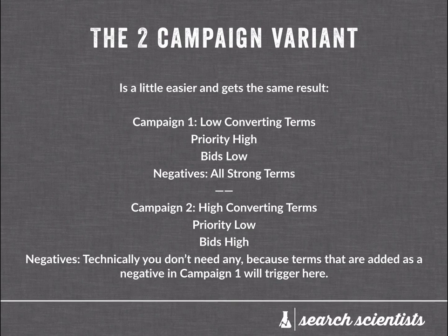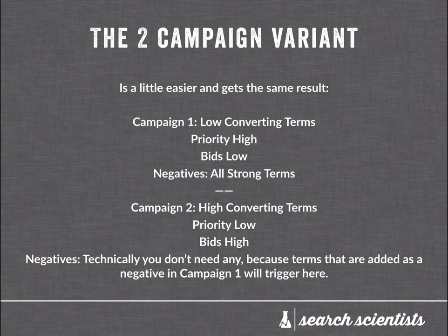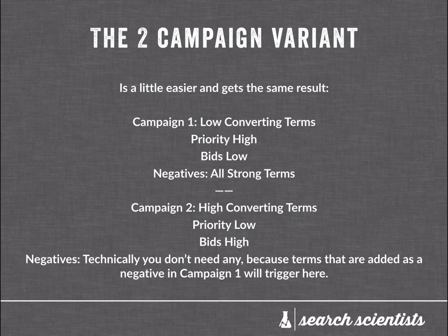So how is this actually different than the method I described in 2015? Well, it's different because right off the bat in campaign two, you barely have to add any negatives — you only appear for terms here that have been added as a negative in campaign one. Of course, bad terms need to be added as a negative everywhere. So if you sell men's sunglasses, you'd probably want to block the word 'women' in both campaigns. But the point is you don't have to manually look at your high-converting terms and add those as negatives in campaign two. You simply add your strong terms as negatives in campaign one and you will automatically appear for them in campaign two.